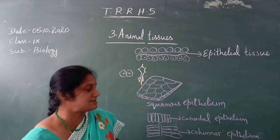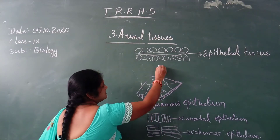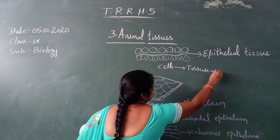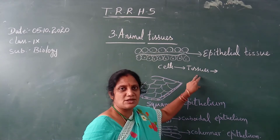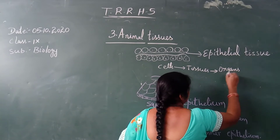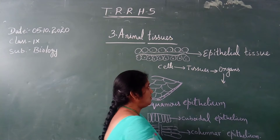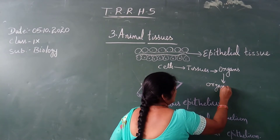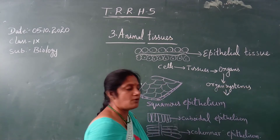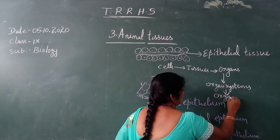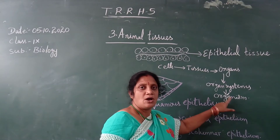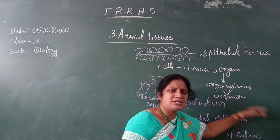Now we will discuss how cells are organized. Cells form tissues. Various kinds of tissues form organs. These organs form organ systems. Organ systems form organisms, which then form communities and so on. The process goes upward but the life process starts with the cells.